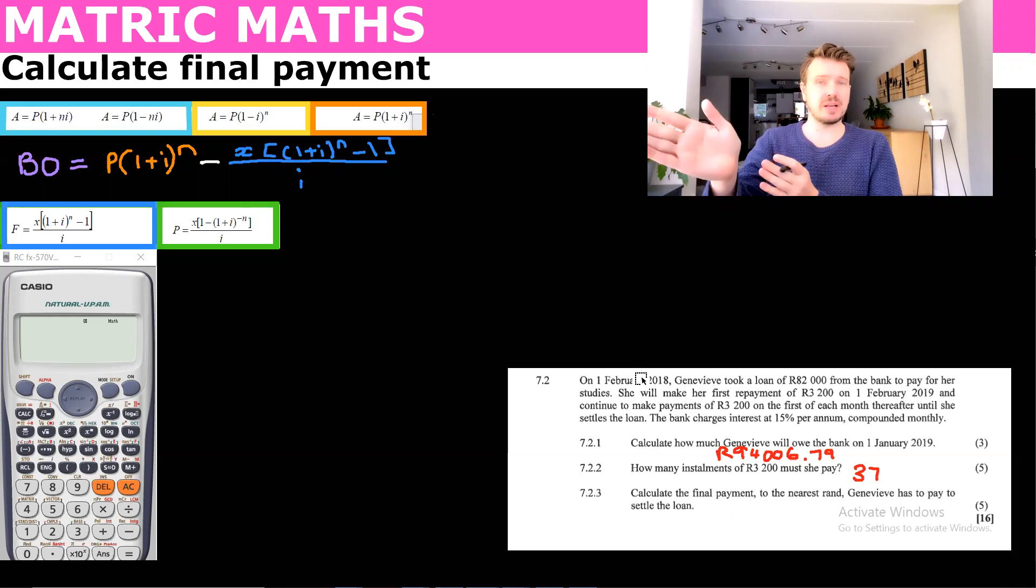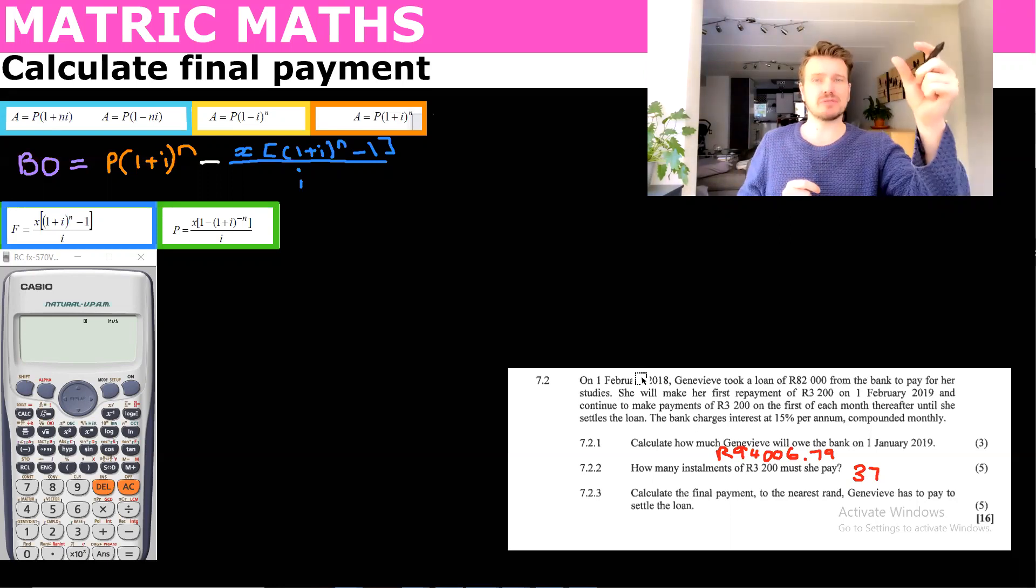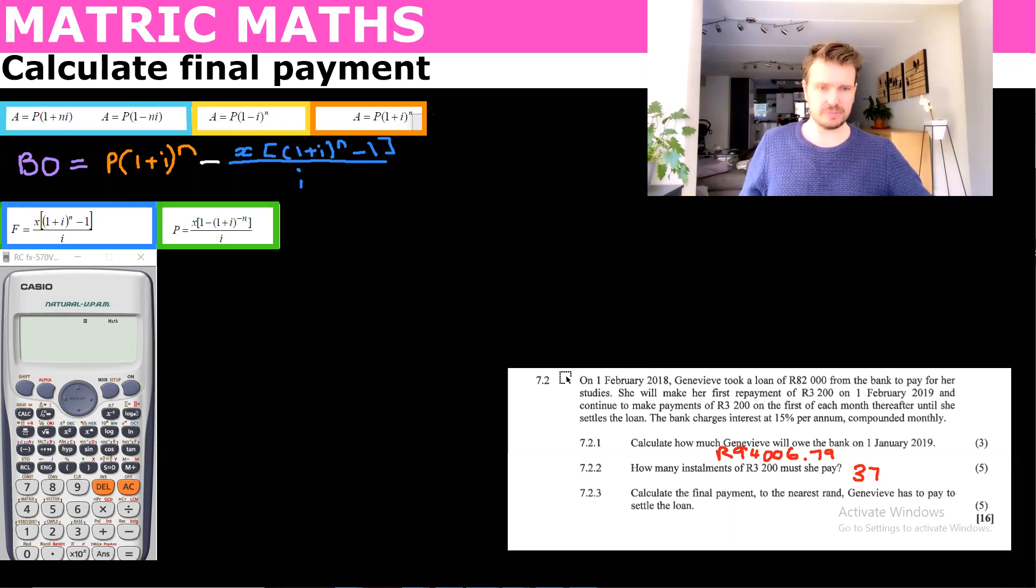So we use the balance outstanding formula. We just take it to the month before you make that last payment. And then that balance, you just need to add interest for one month in order to pay, in order to settle the loan. So what I'm going to do in light blue, here's the balance outstanding. So what this formula says is, take the future value of the payment just before you make that last payment.